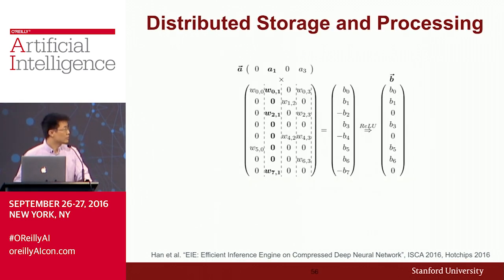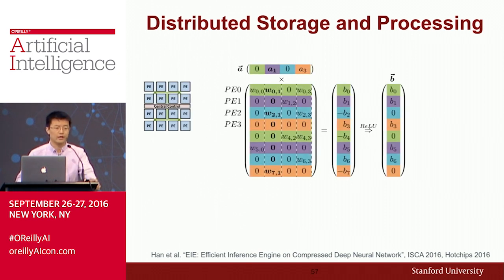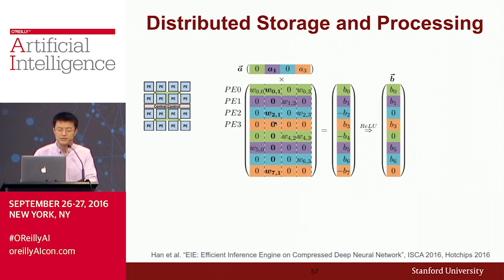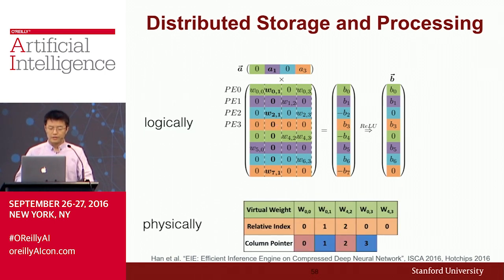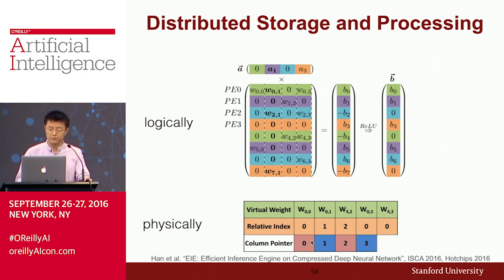Here's how EIE works. For a weight matrix with four inputs and eight outputs, I distribute the matrix across multiple processing elements by the PE number modulo the number of PEs — weights with the same color belong to the same PE. In this example there are four PEs. Physically, only non-zero weights are stored along with relative indices indicating where those weights belong, plus a column pointer pointing to the starting position of each column. This is an edited CSC compressed sparse column format.